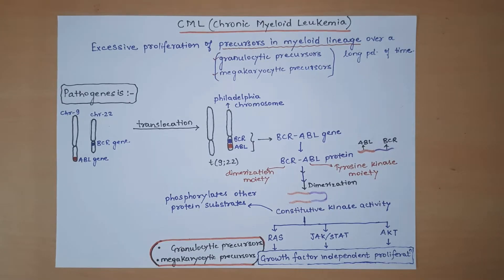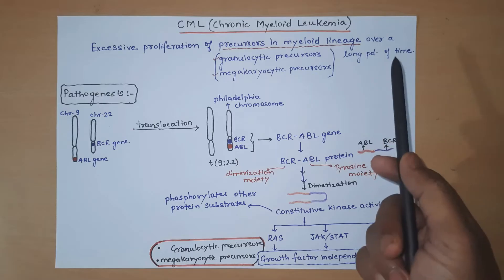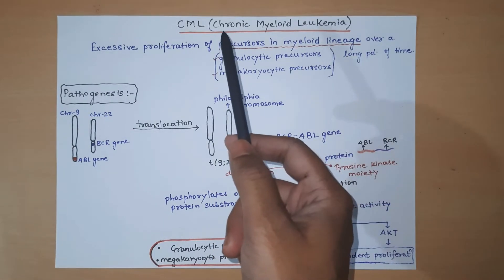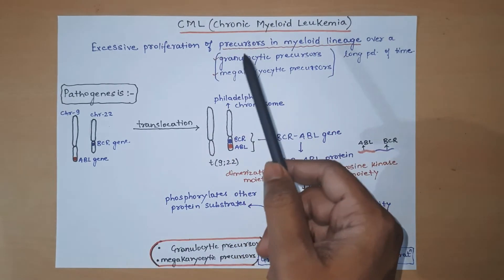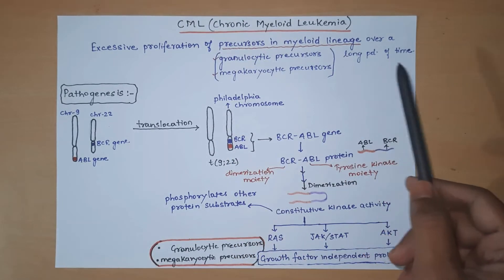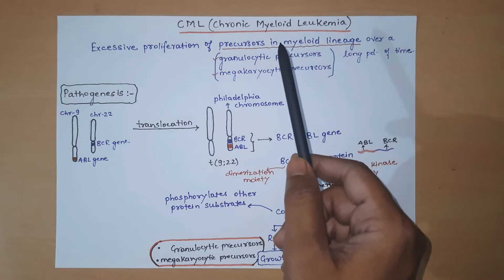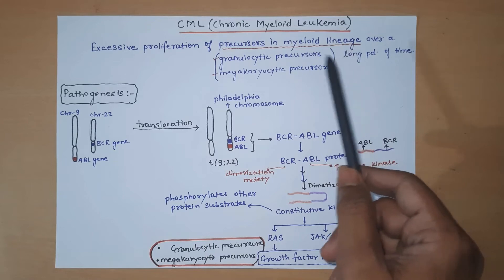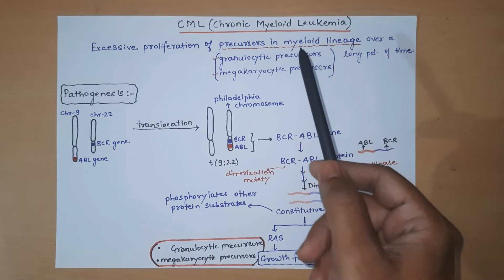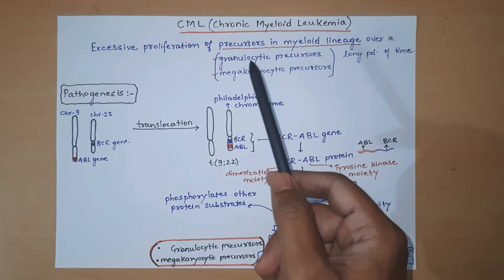Coming to the introduction of CML: CML is a condition in which we see excessive proliferation of precursors in the myeloid lineage over a long period of time. As the name suggests, this is a chronic myeloid leukemia — a chronic condition developing over a long period of time — and what you will be seeing is excessive proliferation of precursors in myeloid lineage cells.